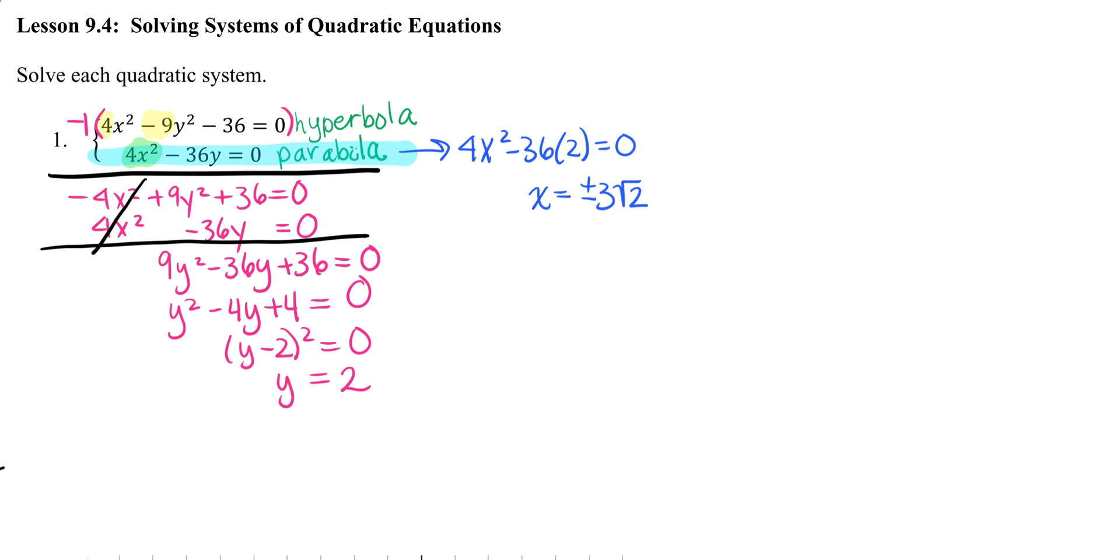Now that I have those, I want to write them out as coordinates for my final answer. So for my final answer, if my x is 3 square root of 2, my y is 2. My second coordinate would be my x is negative 3 square root of 2, my y is 2. And there is my solution.